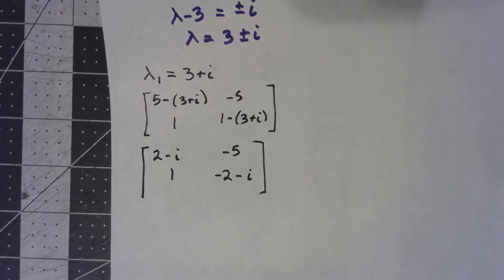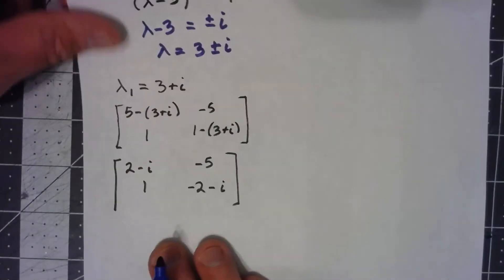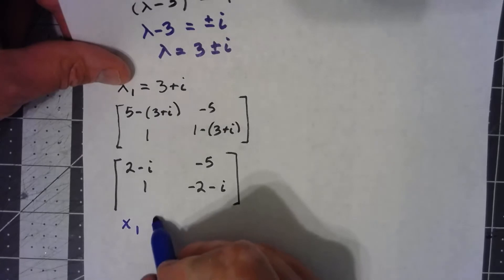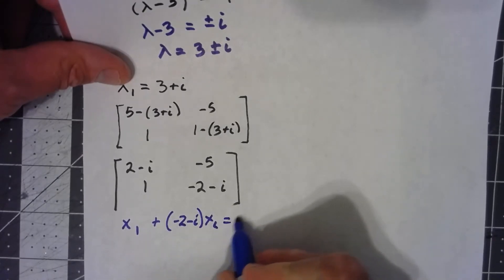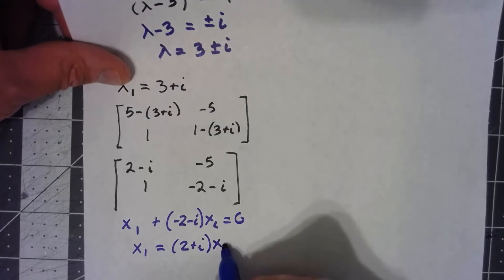So when I'm trying to figure out my eigenvector, I may as well take this bottom one since it's nice and easy. And so we get x1 plus a negative 2 minus i x2 equals 0, or x1 equals 2 plus i x2.